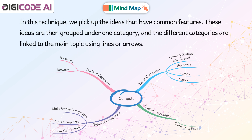In this technique, we pick up the ideas that have common features. These ideas are then grouped under one category, and the different categories are linked to the main topic using lines or arrows.